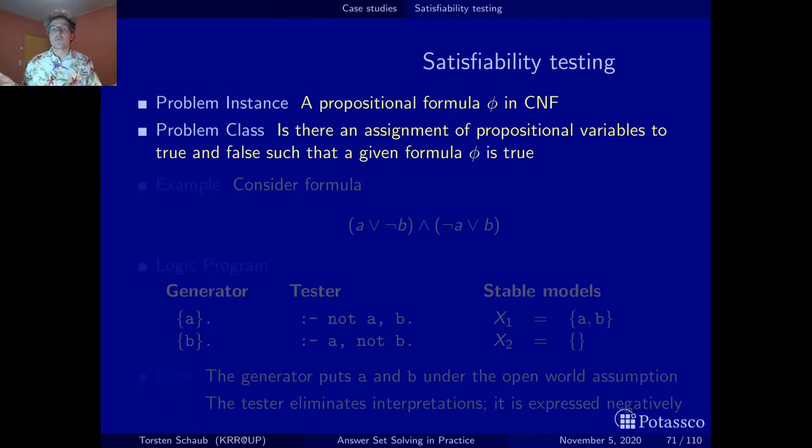The problem as such is pretty straightforward. Check or test whether a propositional formula has a model or not. If it has a model, the formula is satisfiable. Let's detail this a little bit. First of all, one usually makes the assumption that the formula is in CNF, in conjunctive normal form. This is a formula that is composed of a conjunction of disjunctions of literals. Then the goal is to find out whether it has a model or not.